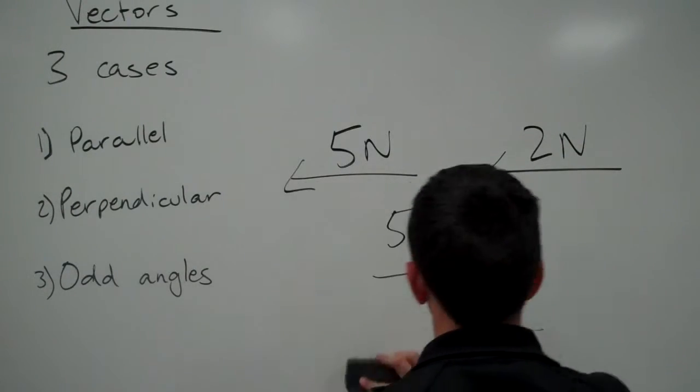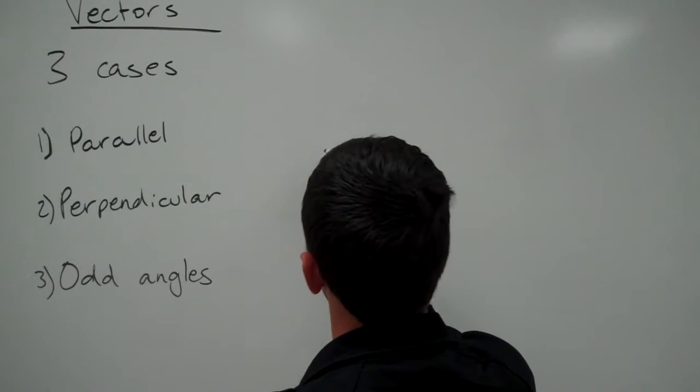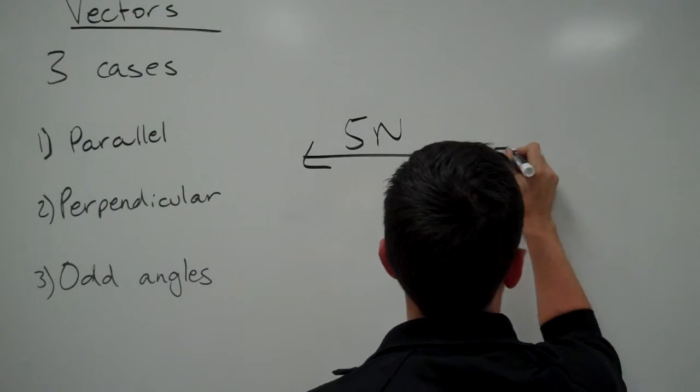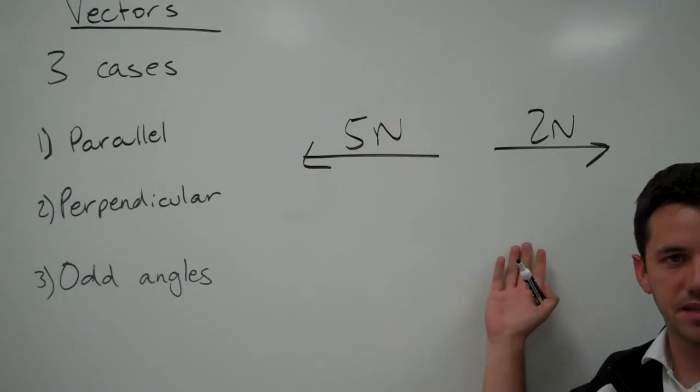Alright, the next way we're going to look at it: it's also parallel, but what if they're parallel and they're going in opposite directions? We have a 5 newton vector and a 2 newton vector but they're going in opposite directions.